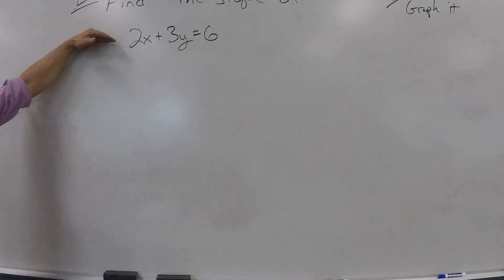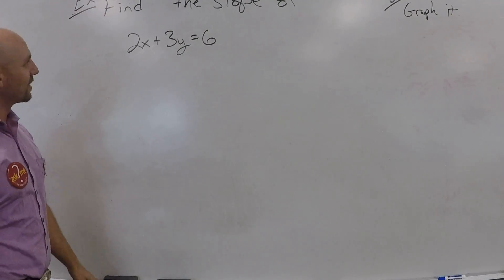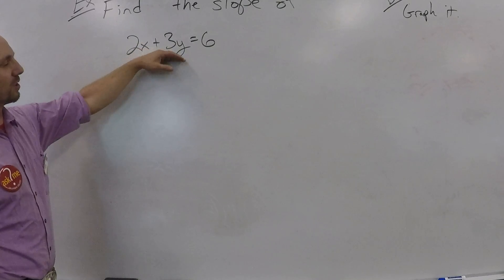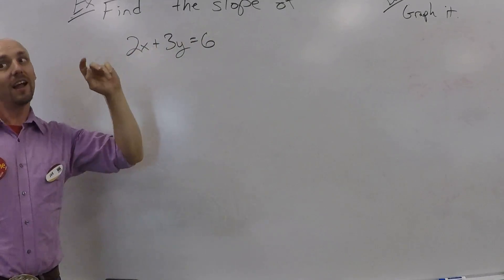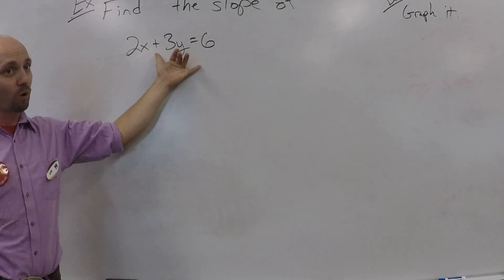Alright, so let's go through how you guys found the slope of 2x plus 3y equals 6. Oh wait, hang on, everybody think to themselves, what form is this?